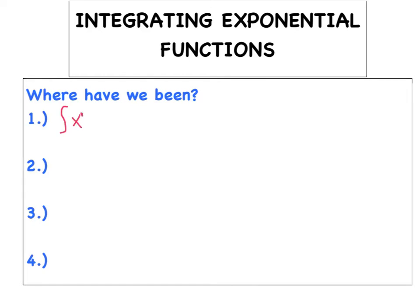If you've got x to the nth power, the antiderivative is x to the n+1, then divide by the new exponent — that's your new coefficient — plus c. That rule is valid as long as n is not equal to negative 1.